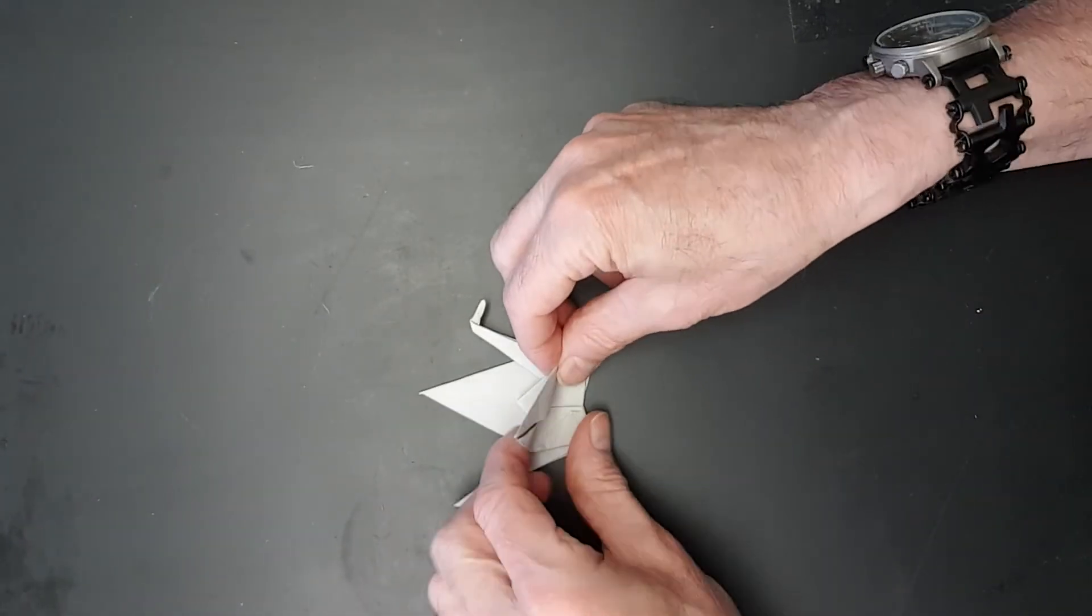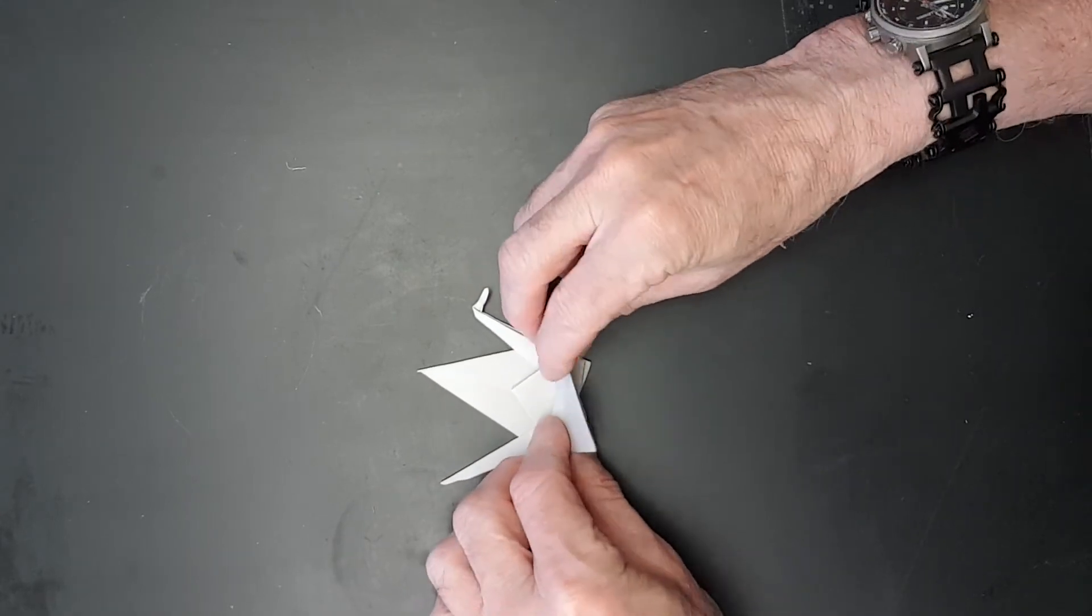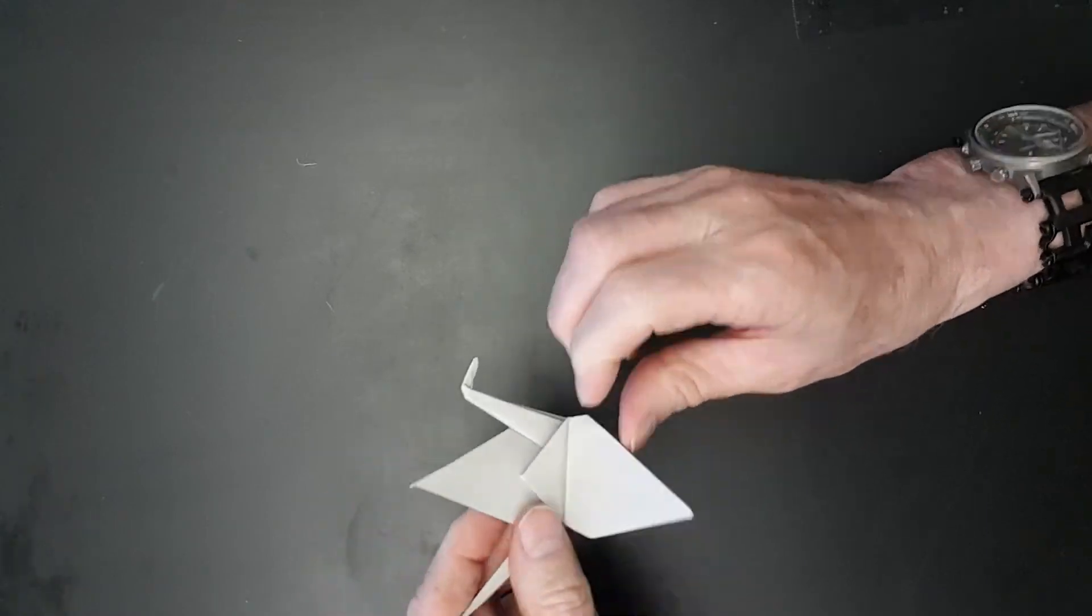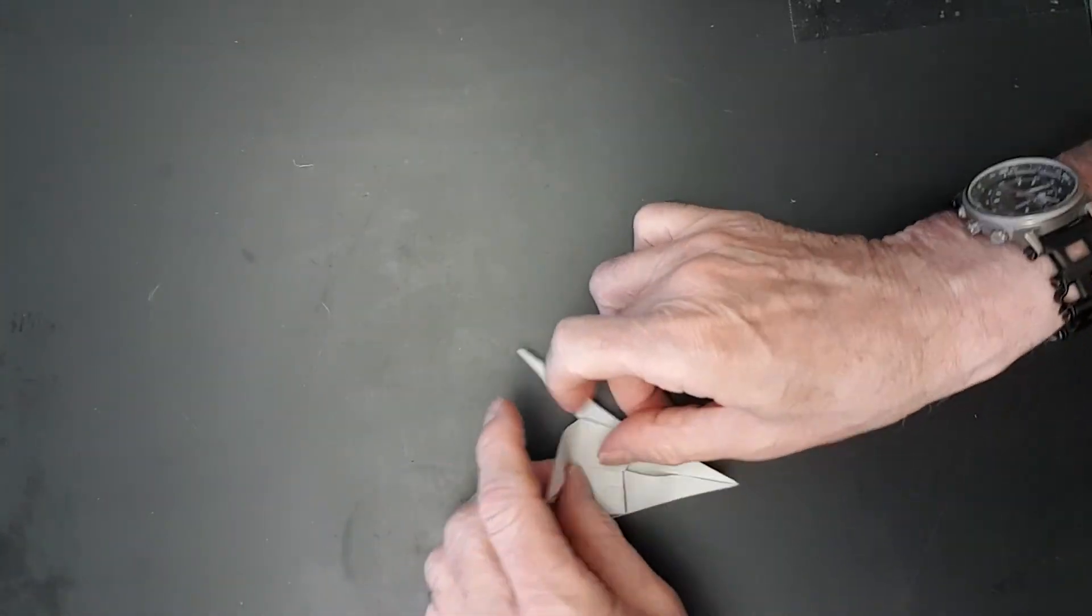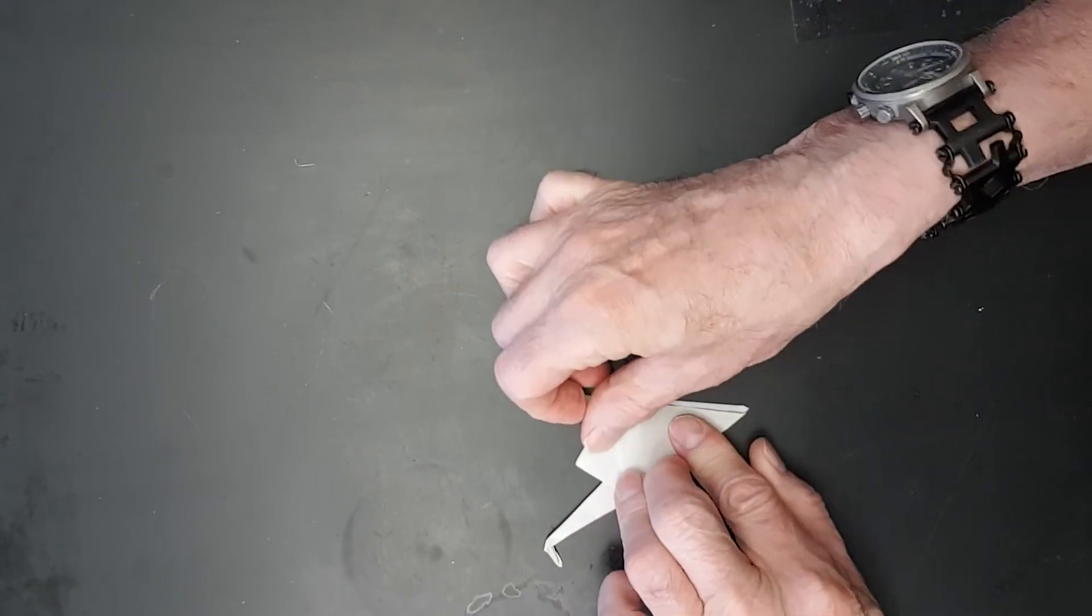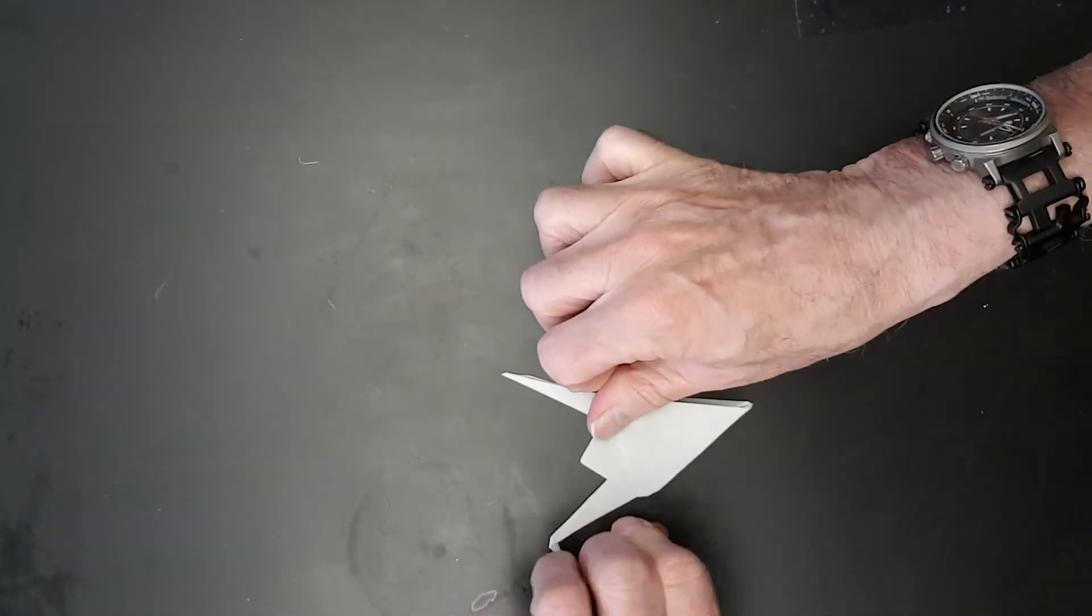We still have to do one more thing two times. We have to give it some wings. So we're coming in here now. One side and the other. It's good to have them match-ish. Creasing nicely and there we go.